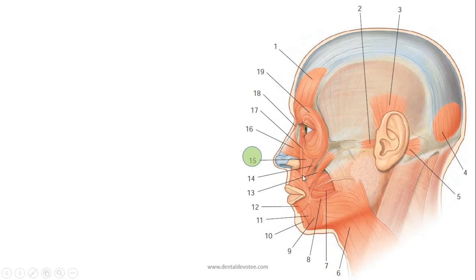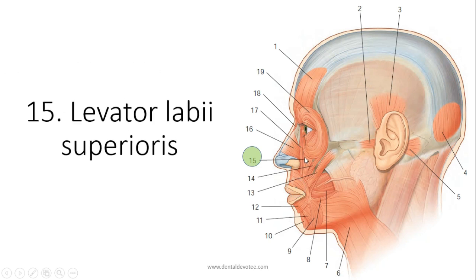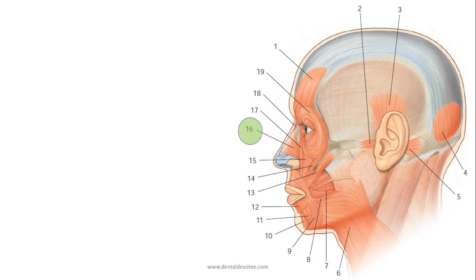And the 15th number muscle, again what it does is it elevates the upper lip, so its name is levator labii superioris, upper lip elevator.